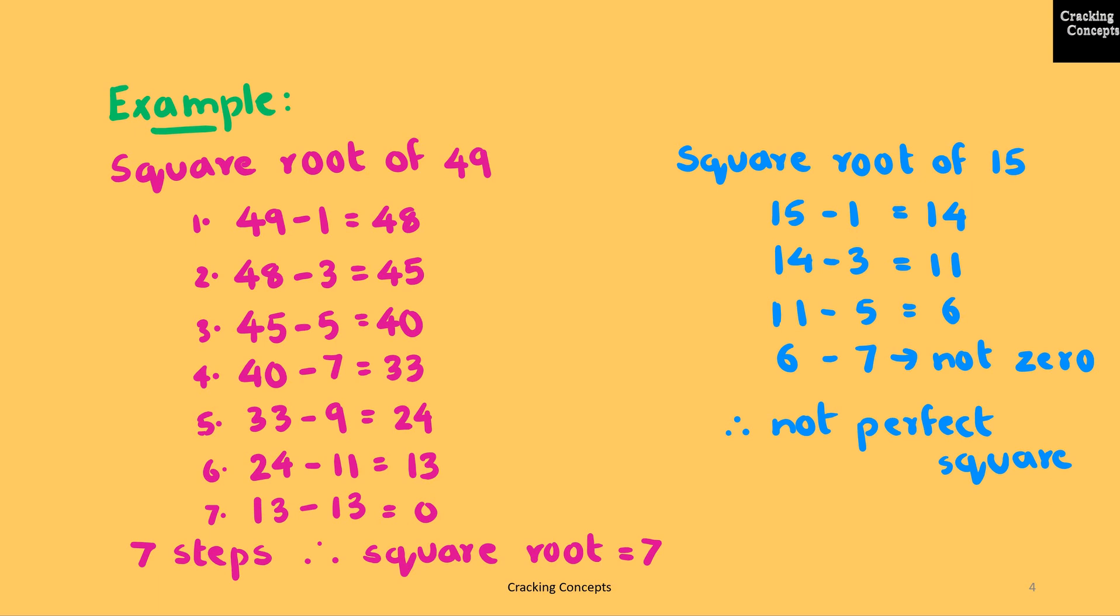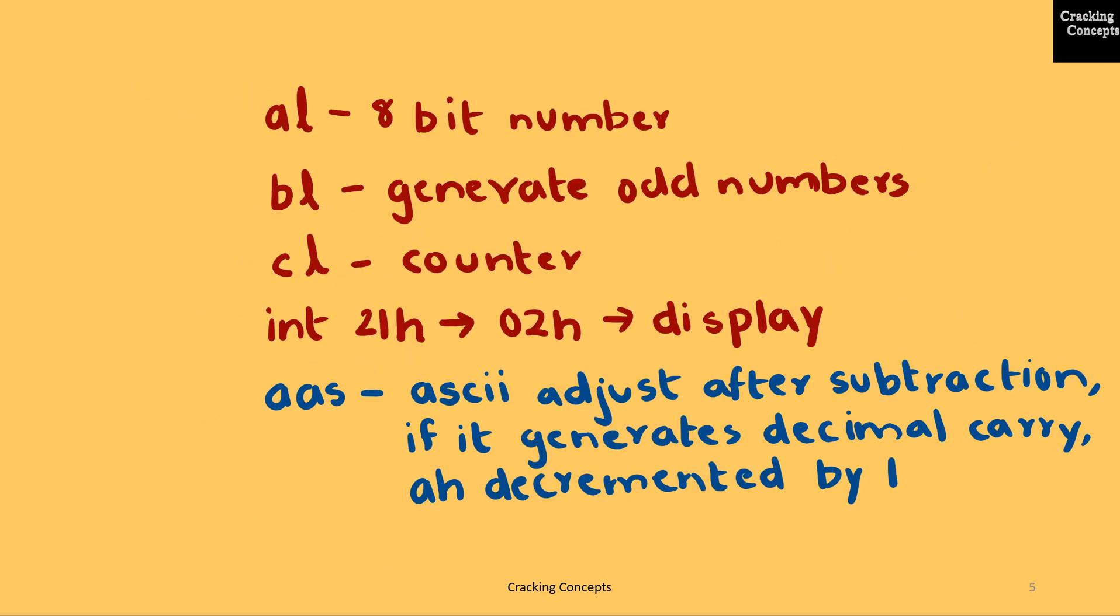In the case of 15, the same technique is used. The first odd number 1 is subtracted from 15 which gives 14. The second odd number 3 is subtracted from 14 which gives 11. This is repeated, but in the last step we see that 6 minus 7 is not giving us 0, which means 15 is not a perfect square.